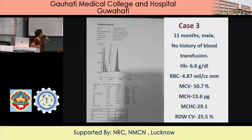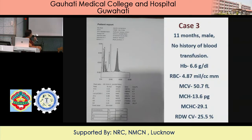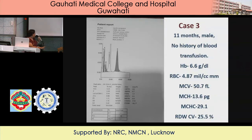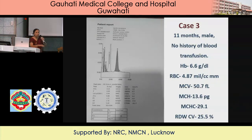Another case: 11-month-old baby, male, no history of blood transfusion. Hemoglobin is 6.6, RBC is 4.87, MCV is 50.7, MCH is 13.6, MCHC is 29.1, RDW is 25.5. F is 6.7. There is no unknown peak before F. A1a is 4.9, labile is 1.4, P3 is 6.9, A0 is 57.8, A2 is 18.2 with a retention time of 3.24, and the total area is normal. What is the diagnosis?